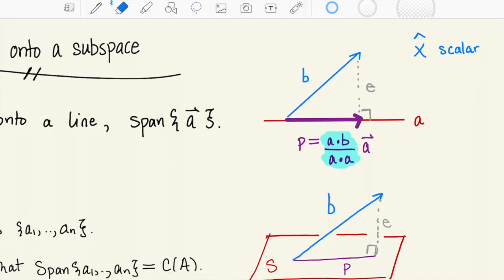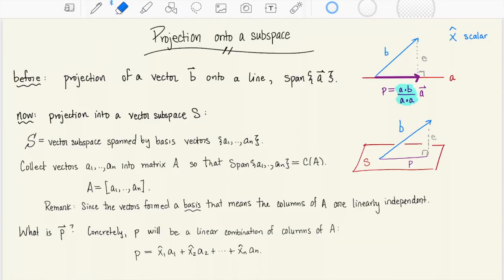The color coding of these vectors is indicative of what's going on. I have a vector a in red and I'm projecting the blue vector onto a and that combination that I'm looking for is represented by purple. Well now I want to do something similar but I'm not just after one scalar x hat. I need a whole collection of scalars x1 hat, x2 hat, x3 hat and so on so that I can write my new projection vector in this linear combination.